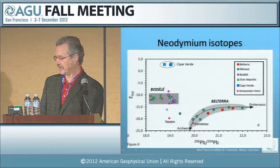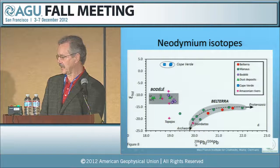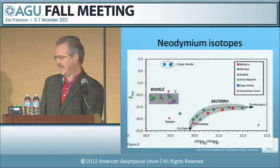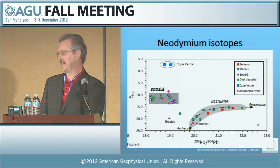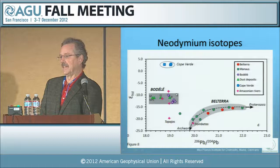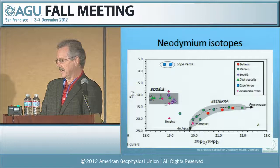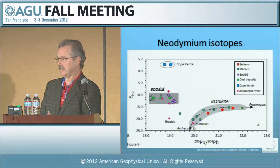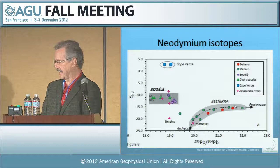The epsilon neodymium — the neodymium isotope composition plotted against the lead isotope composition — clusters all the African materials together. One can get an idea of the age: the Baudelaire is neoproterozoic, about one billion years old, whereas the Belterra reflects more ancient material — Archean, around three billion years ago, to middle Proterozoic. So it's also material of quite different ages.